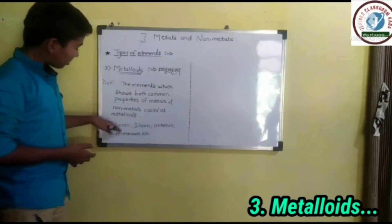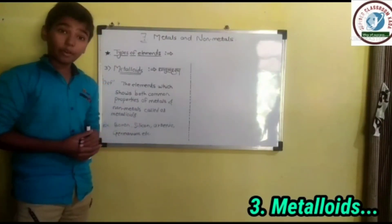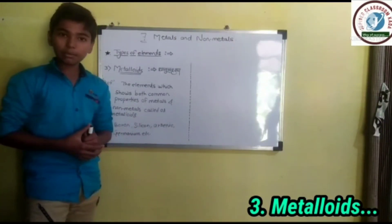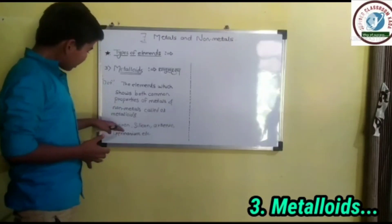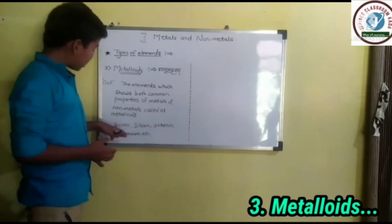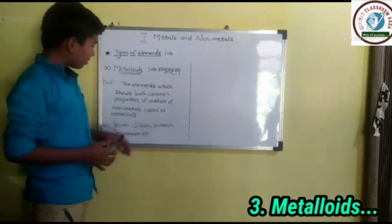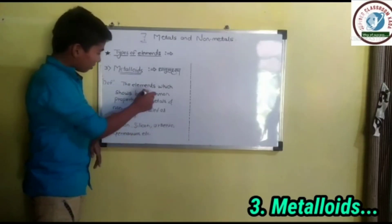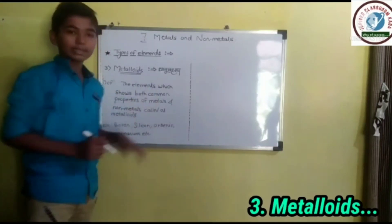The third type is metalloids. Examples of metalloids are Boron, Silicon, Arsenic, Germanium, etc. These elements show properties of both metals and non-metals.